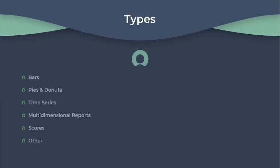Now let's look at the types of reports. There are different types of reports in ServiceNow: bars, pies and donuts, time series, multi-dimensional reports, scores and others. Bar reports enable you to compare scores across data dimensions. Pies and donuts reports visualize the relationship between parts and the whole of a dataset using shapes such as pie. Time series reports visualize data over time; in addition to instance data and imported data sources, you can also use metric-based data in time series reports.